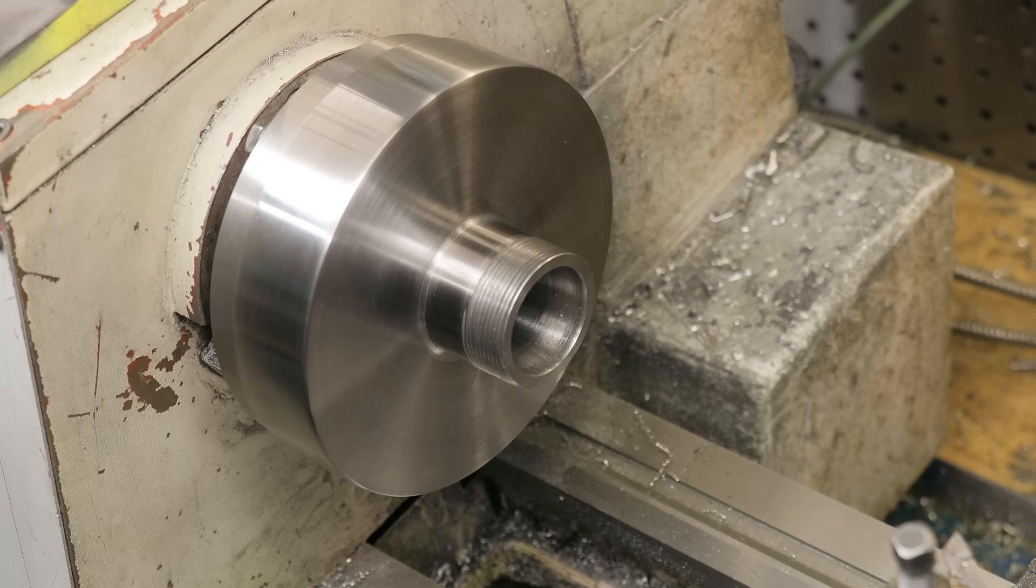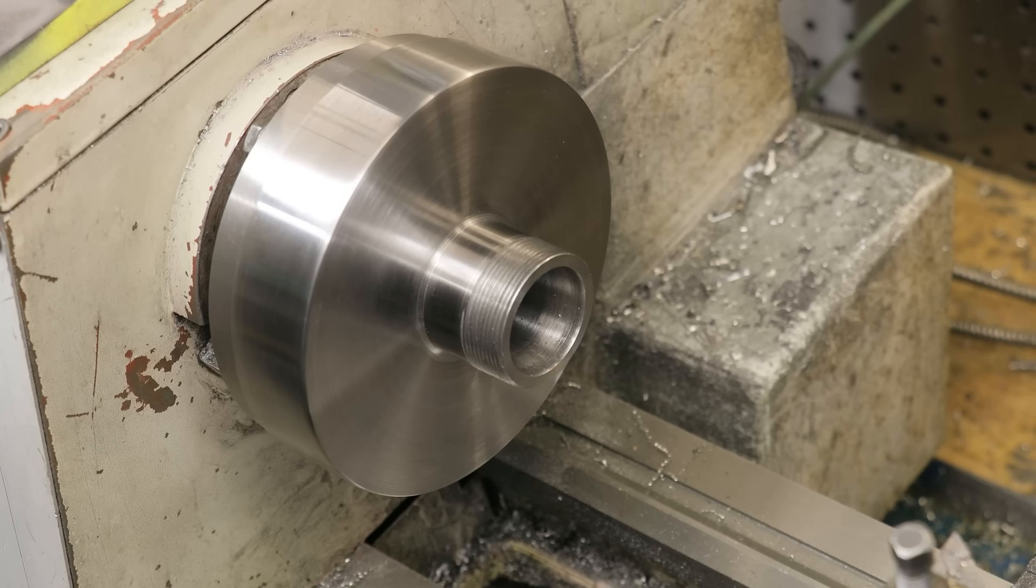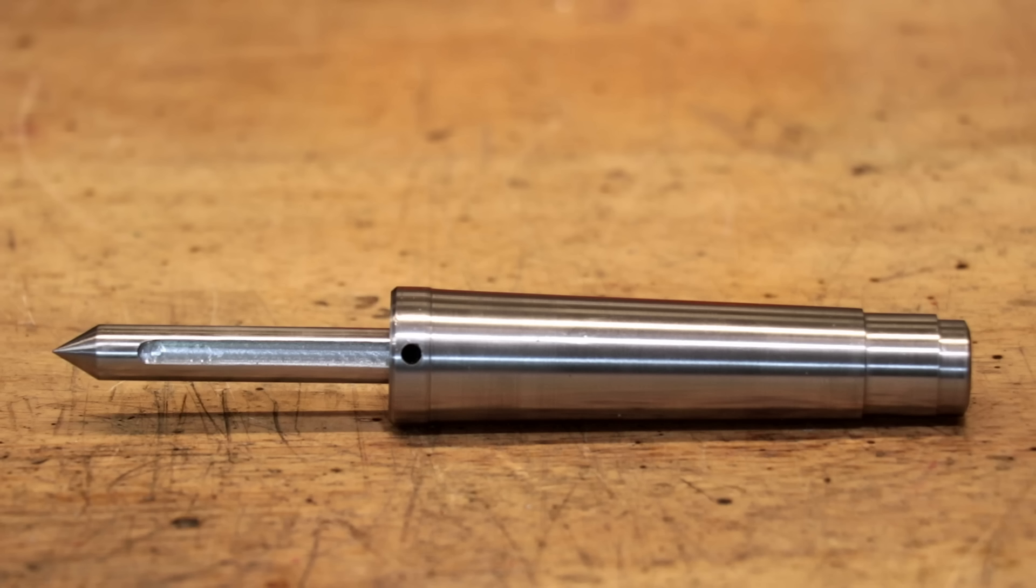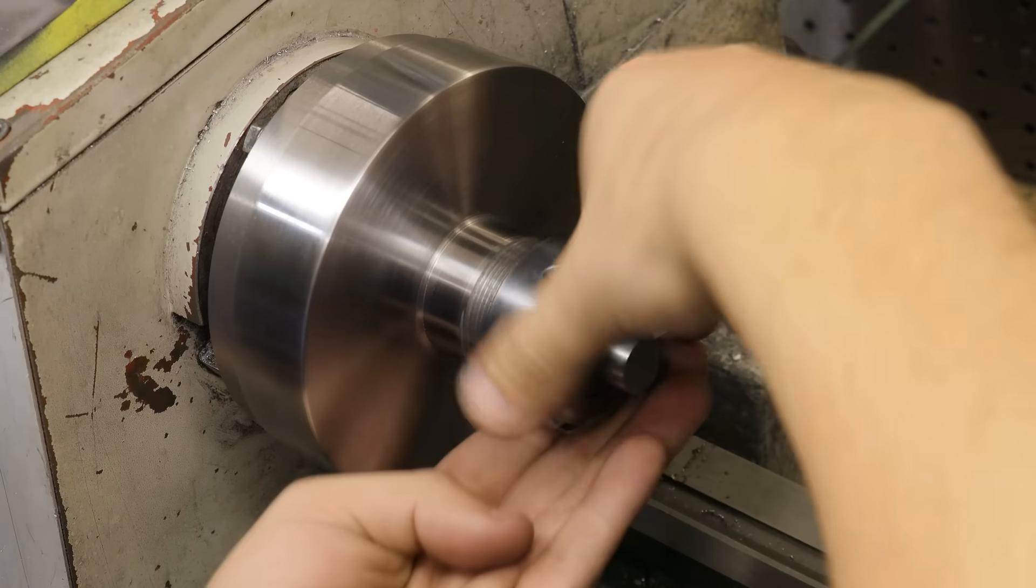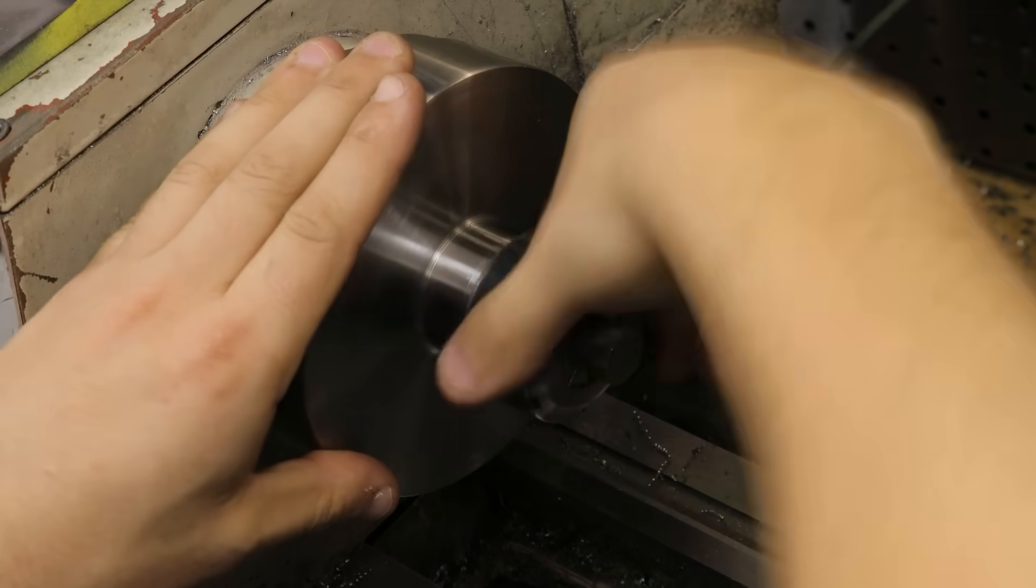Now the style of holder you do can sort of go either way. You could complicate it and go for some sort of Morse taper, which I've done before, but that takes a lot of setup and really isn't necessary here. So what I'll do here is something straight that you can simply chuck in a drill chuck, much easier to do and much quicker to set up.